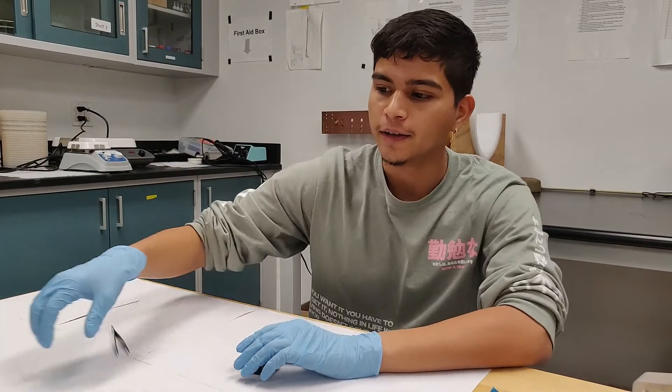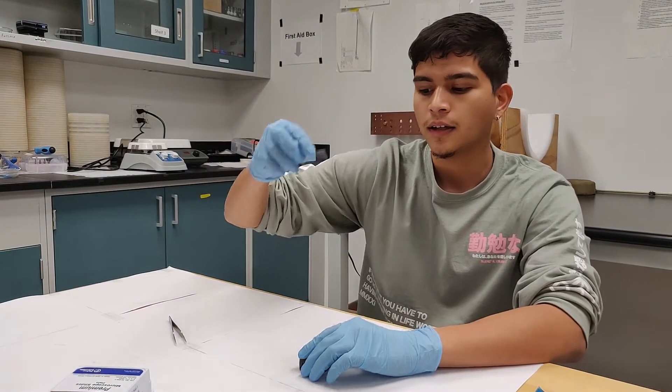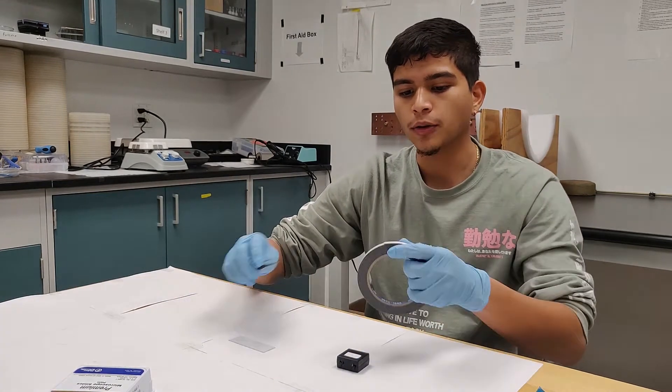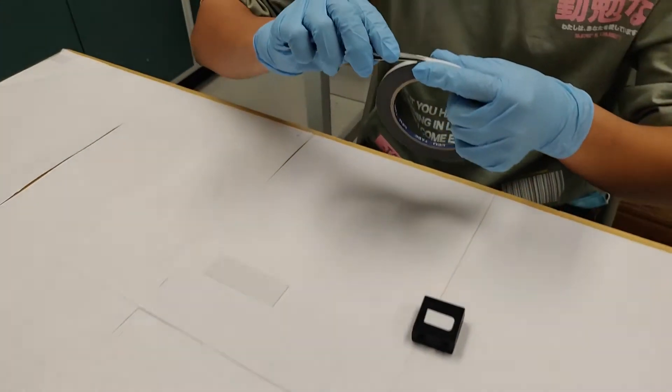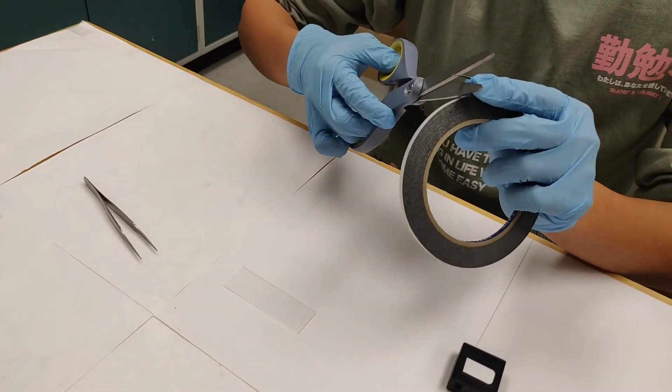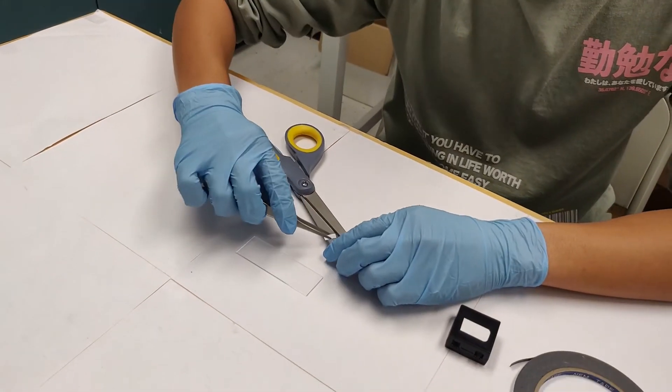So to get started, the first thing you do is get a microscope slide. This is what you'll put your substrate on. And to hold it in place, you want to get a piece of carbon tape. Cut it to about the size of the substrate, then place it on your slide.